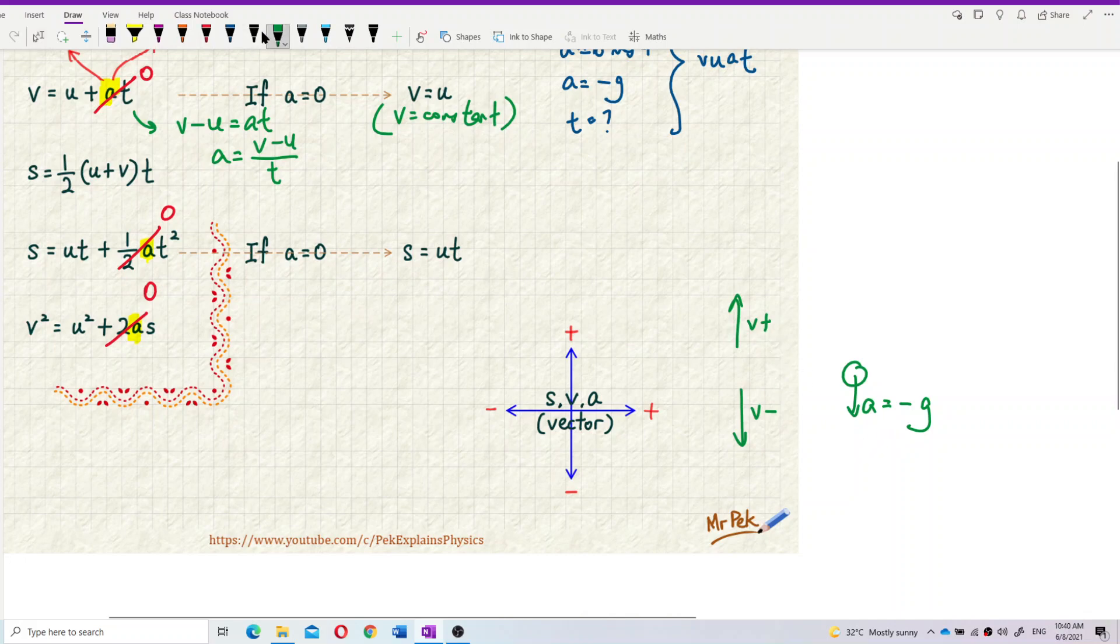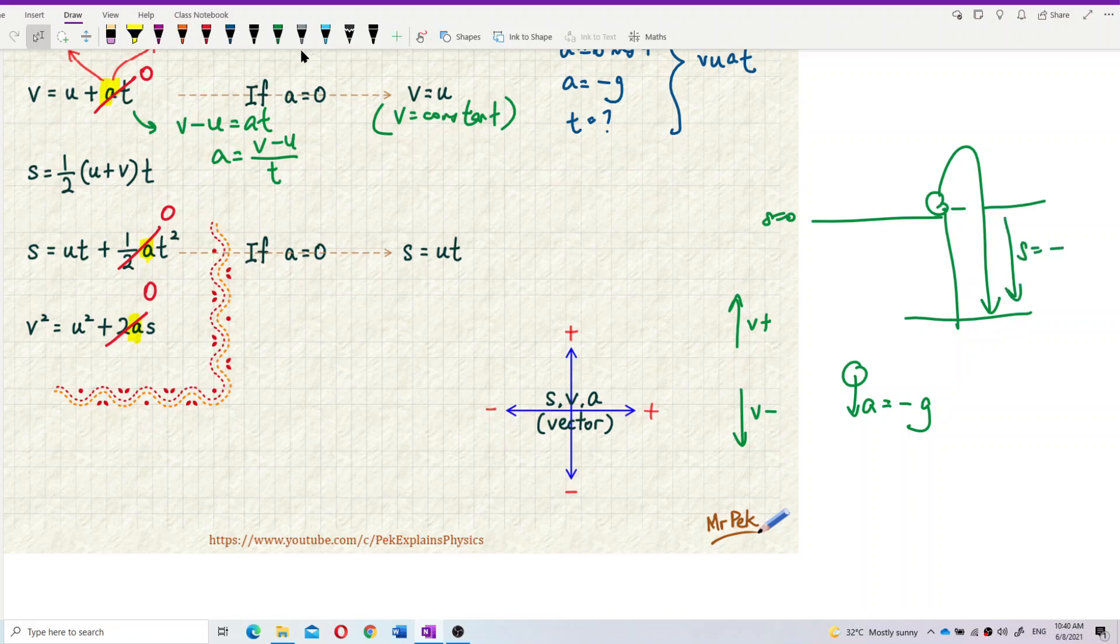And also the displacement. Talking about displacement, let's say this is the origin. Let's say the object you throw and then throw downward like that. So also have negative displacement. So the direction, all the direction, all this direction, no matter it's velocity, acceleration or displacement, you need to have the positive and negative sign to show the direction. That's all for this part.